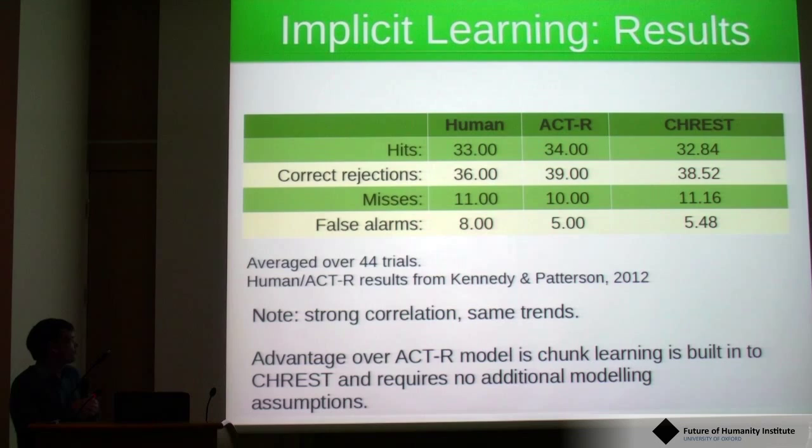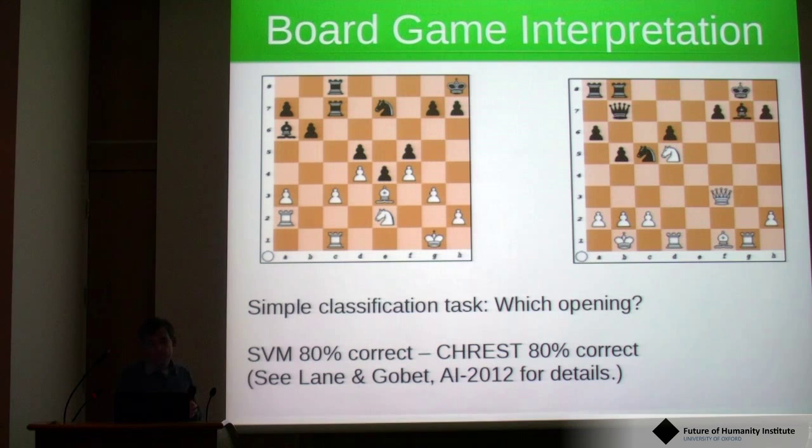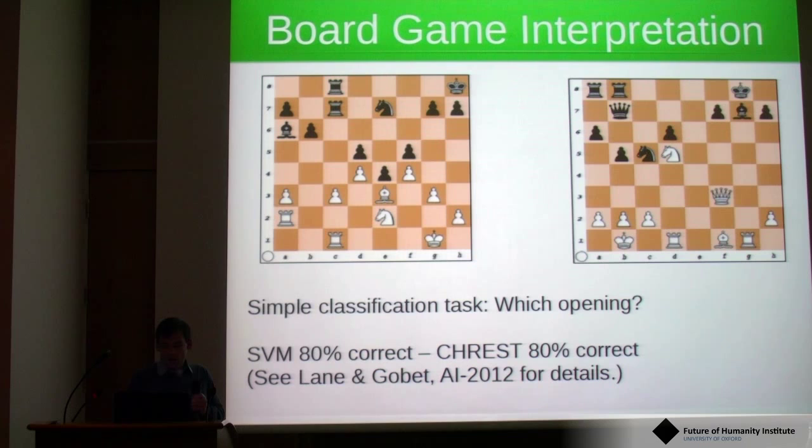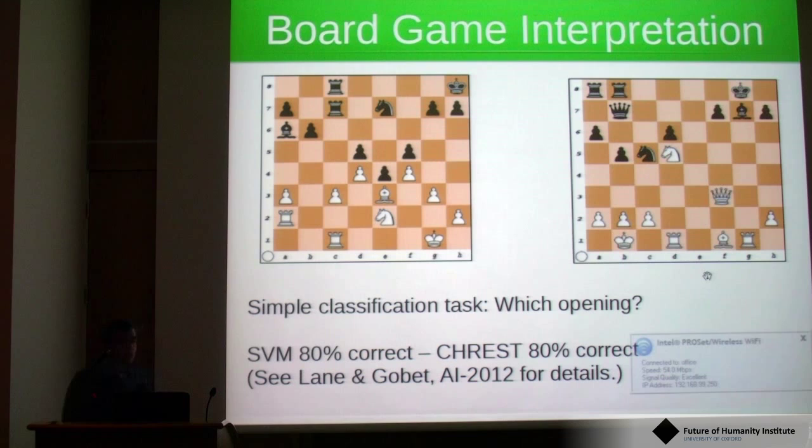We've moved on to the idea of interpreting board games, which is a fairly complex task. In this first task, over here we have a position after move 20, and again another position at move 20. We were asking the model to figure out what opening these positions came from.